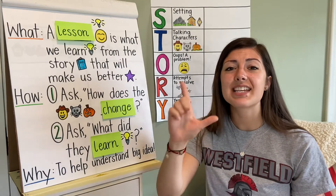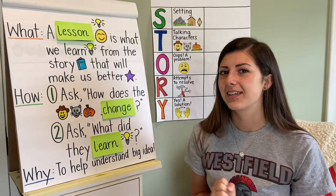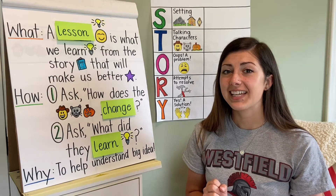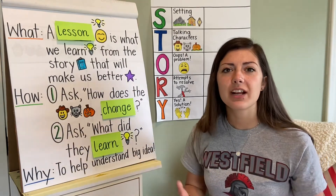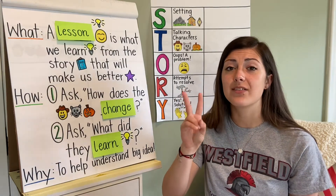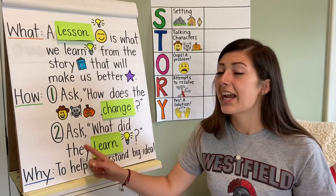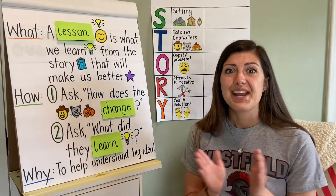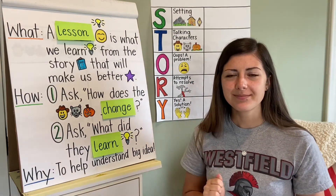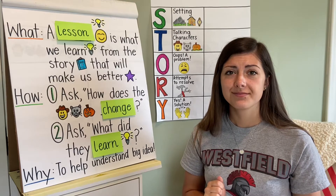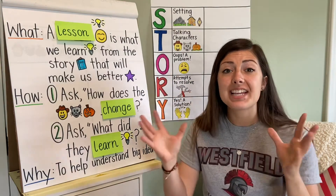When we want to find a lesson in a story, we know there are two things we have to look for. What's the first thing we have to ask ourselves? We need to stop and ask ourselves, how does the character change? After we figure out the changes, what's the second question we ask ourselves? Next we have to ask ourselves, what did the characters learn? And very last, why do we want to learn about lessons in a story? Good readers identify the lesson to better understand the big idea in our story.